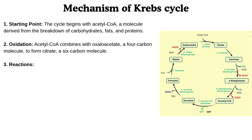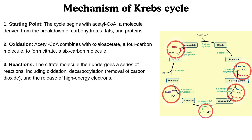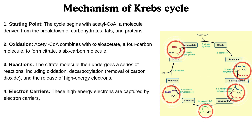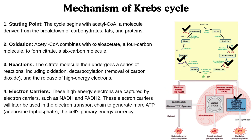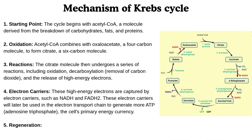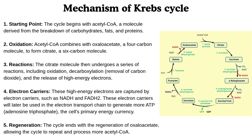Then come the reactions. The citrate molecule then undergoes a series of reactions, including oxidation, decarboxylation, and the release of high-energy electrons. These high-energy electrons are captured by electron carriers such as NADH and FADH2. These electron carriers will later be used in the electron transport chain to generate more ATP, the cell's primary energy currency. The last step is regeneration. The cycle ends with the regeneration of oxaloacetate, allowing the cycle to repeat and process more acetyl-CoA.